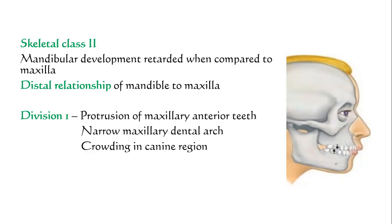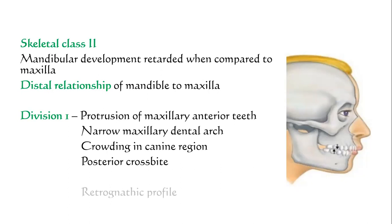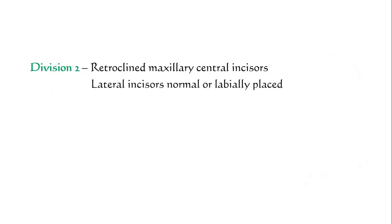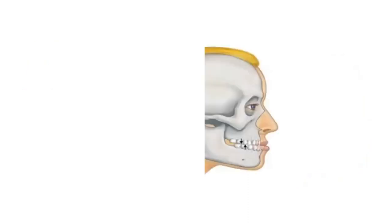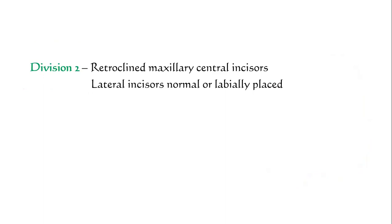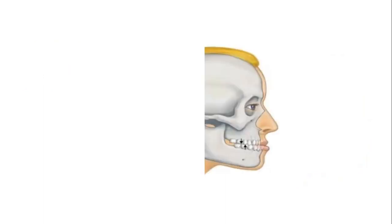Skeletal Class II is subdivided into Division I and Division II. In Division I, additional features include protrusion of maxillary anteriors, narrow maxillary dental arches, crowding in the canine region, posterior crossbite, and a retrognathic profile. In Division II, there will be retroclined maxillary central incisors, and the lateral incisors will be in normal or labial position.